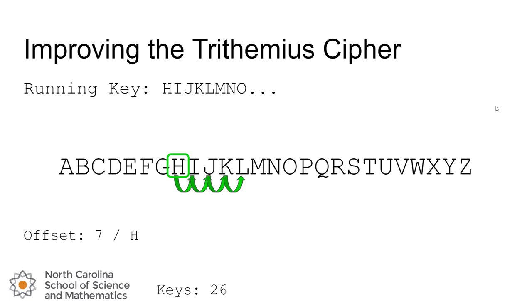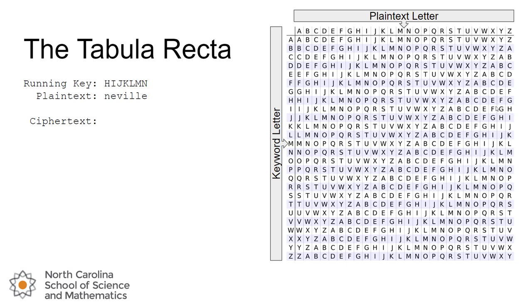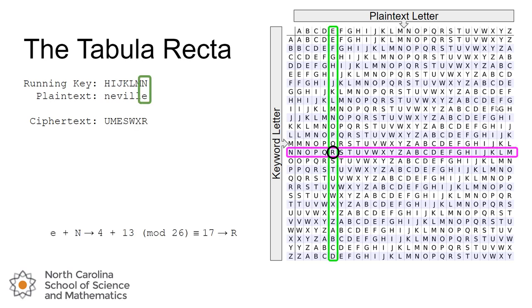Let's take a look at how this gets implemented in practice. So again, standard tabula recta — we've generated our running key starting at H, and we have the plaintext word 'Neville.' We work through it the exact same way with our tabula recta: nothing different, we move down the line, find the row, find the column, find the intersection, or mathematically convert the key and the plaintext to numbers, add, and mod by 26. Nothing new here.